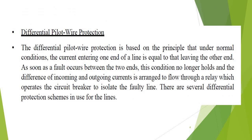In differential pilot wire protection, it is based on the principle that under normal operating conditions, the current entering one end of the line is equal to that leaving the other end. As soon as a fault occurs between the two ends, this condition is no longer valid. The difference of incoming and outgoing current is arranged to flow through the relay and operate the circuit breaker to isolate the faulty line.